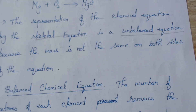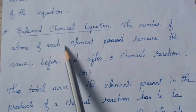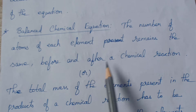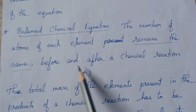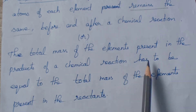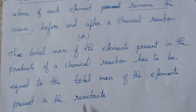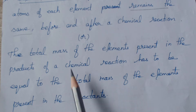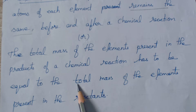As per the law of conservation of mass, we have to balance the equation. Whatever mass is present before the reaction must be present after the reaction. A balanced chemical equation means the number of atoms of each element remains the same before and after a chemical reaction. The total mass of elements in the products must equal the total mass in the reactants.